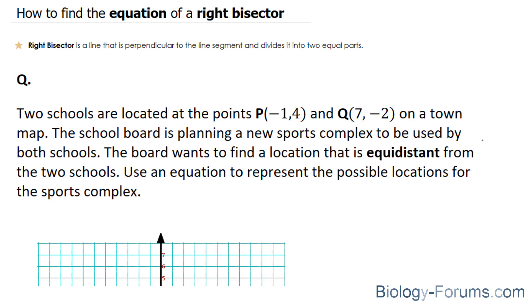The question reads: two schools are located at the points P and Q on a town map. The school board is planning a new sports complex to be used by both schools. The board wants to find a location that is equidistant from the two schools. Use an equation to represent the possible locations for the sports complex.